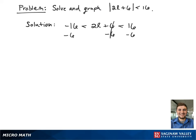We're going to first subtract 6 from all sides to get rid of the single term in the middle. This gives negative 22 is less than 2L is less than 10.